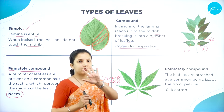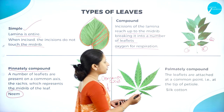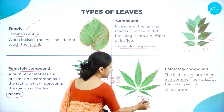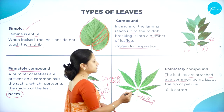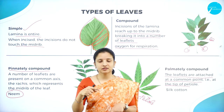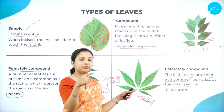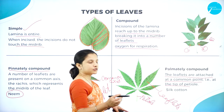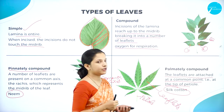Next is palmately compound leaves. Palmately compound leaves just look like the hand — the palm. That is why it is called palmately compound. Here the leaflets are attached at a common point at the tip of the petiole. In pinnately compound leaves there is one main axis from which leaflets arise, but in palmately compound leaves, at one point — the tip of the petiole — the leaflets will arise. This is usually seen in silk cotton.